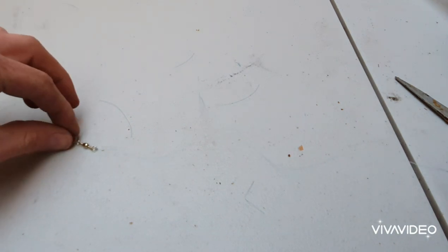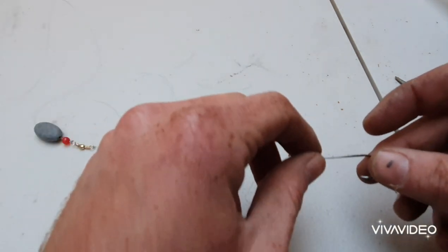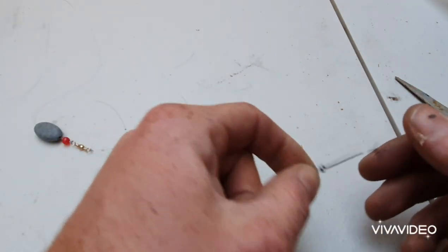We've got our sinker, red bead, swivel, roughly around 40cm of trace, and a size 1 long shank bait holder hook.